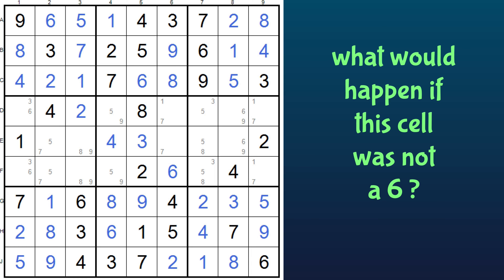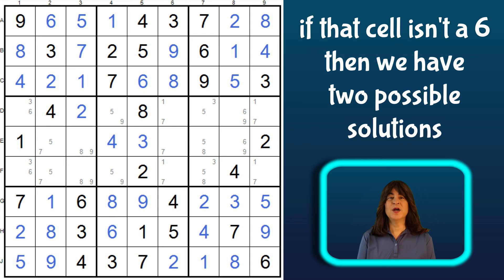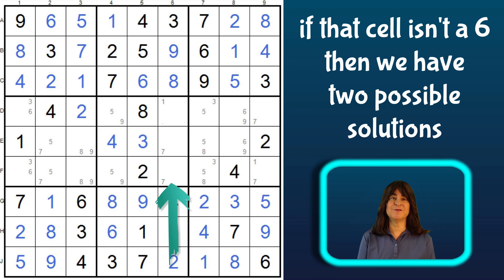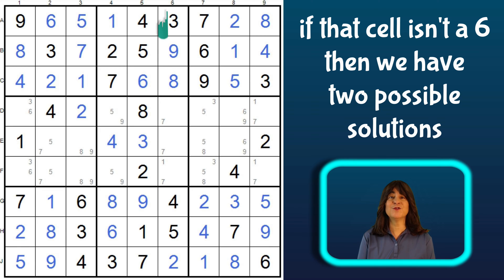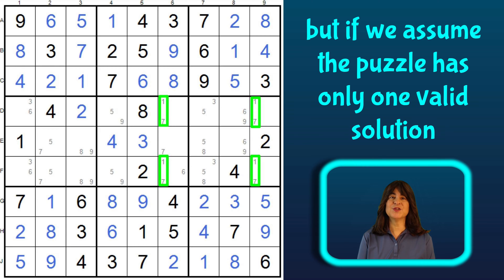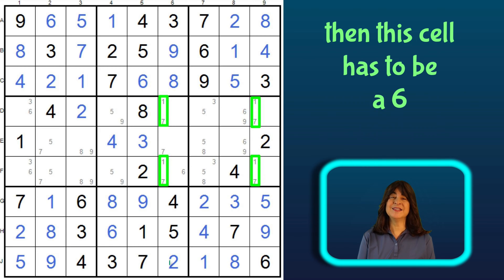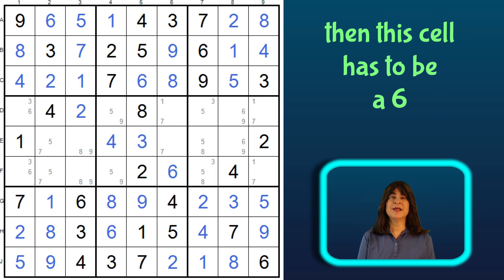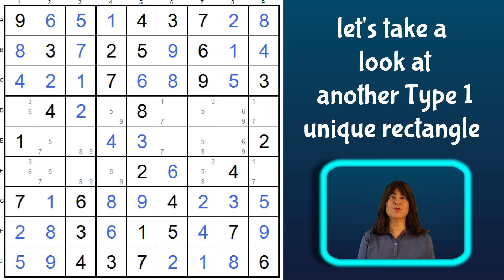Let's take a look at what would happen if this cell was not a 6. Well, then in row D this could be a 1 and this a 7, which would make this cell in row F a 7 and this a 1. But it could also work the other way around — we could flip it where the first cell is a 7, then this is a 1, and then this is a 1, and then this is a 7. So if we eliminate the 6, there would be two possible solutions to this puzzle. Since we are assuming the puzzle has only one valid solution, this cell has to be a 6.